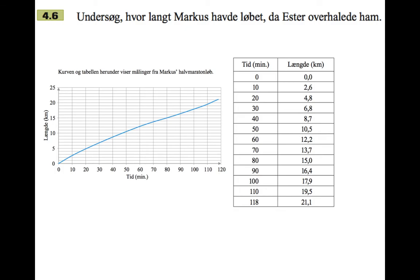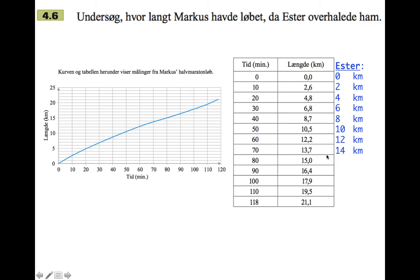Question 4.6: investigate how far Marcus had run by the time Esther overtook him. One approach is to look at the table with the times and think about how far Esther has run after those times. Because she's going at a constant rate, at 0 minutes she's done 0 kilometers, and at 10 minutes she's done 2 kilometers since she does every kilometer in exactly 5 minutes. Comparing Esther's progress to Marcus's, you can see it reaches a point somewhere between 12 and 14 kilometers where Esther has run more than Marcus.